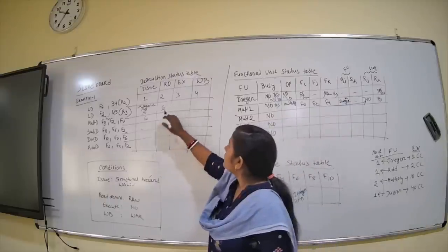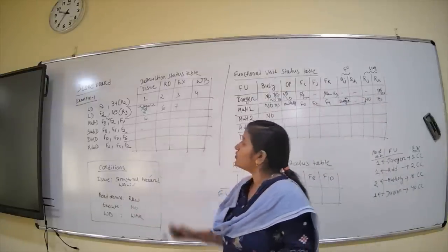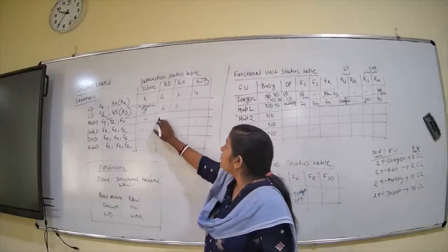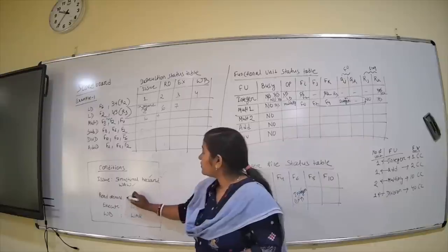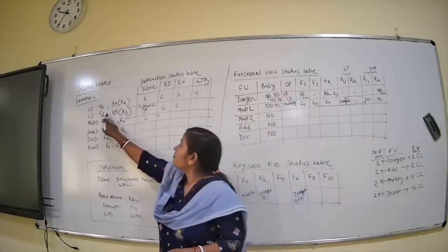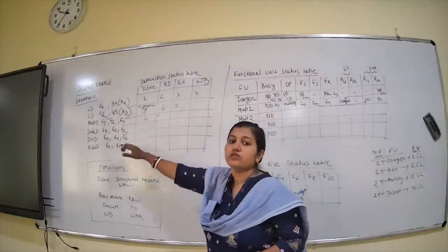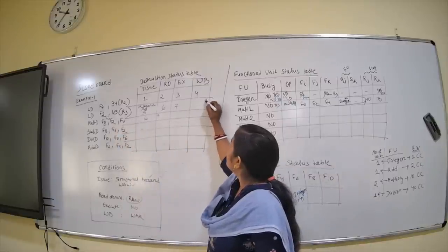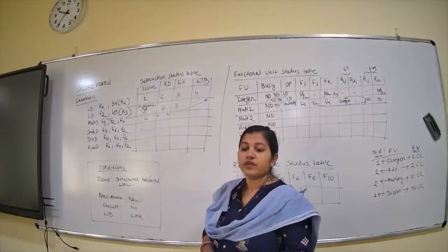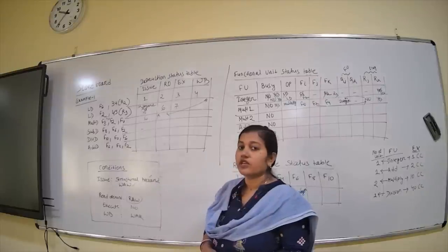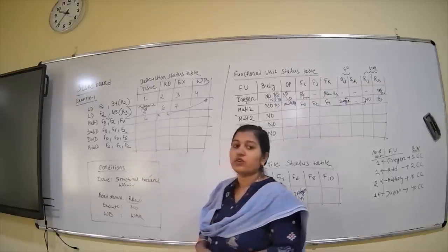After the seventh clock cycle, for the second load instruction all operands are available, so it goes to the execute stage — which takes one clock cycle. Can the multiply read operands at cycle seven? No — the condition for read operand is RAW, and F2 is not yet written back. When F2 is complete we can start the read operand for multiply. So at the seventh clock cycle we cannot do read operand for multiply. Can we issue subtract? Let's check.